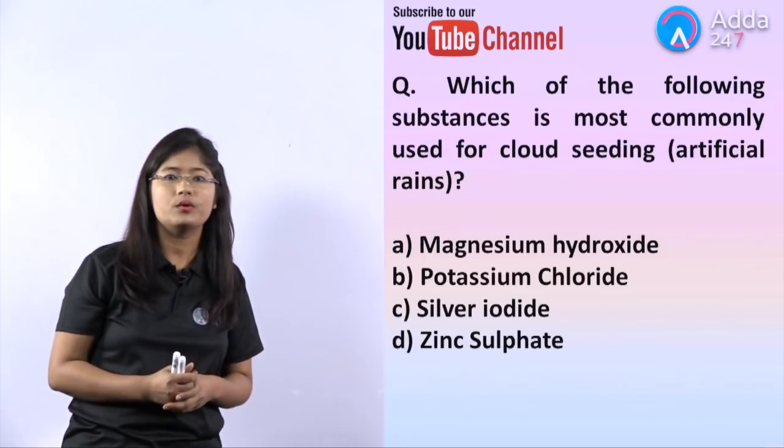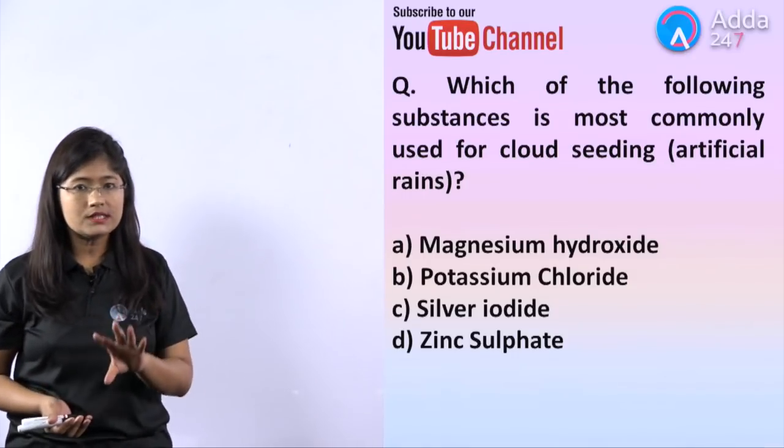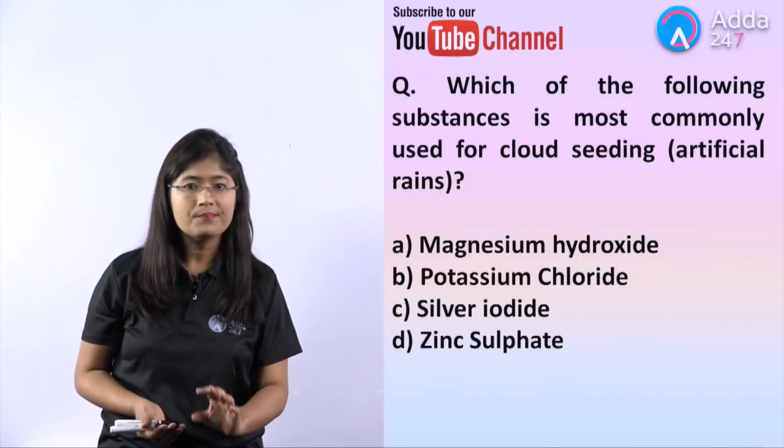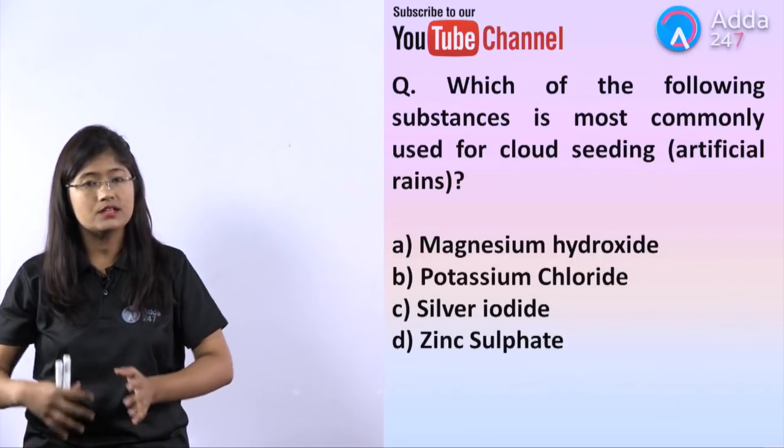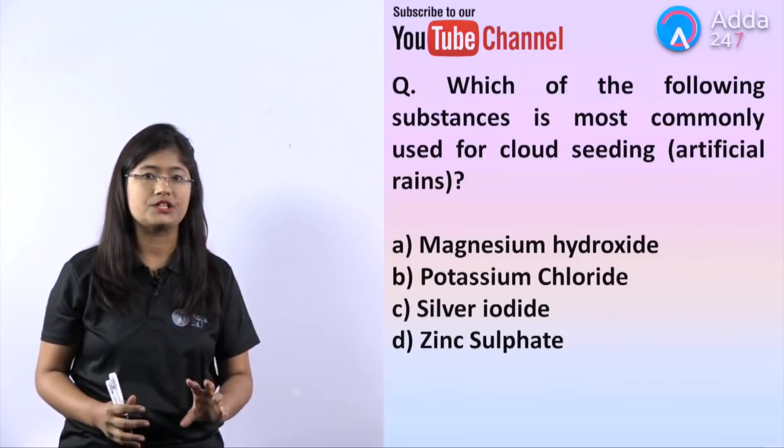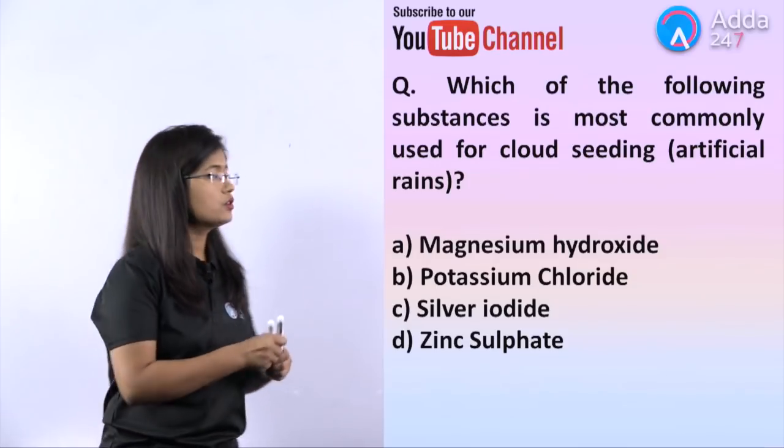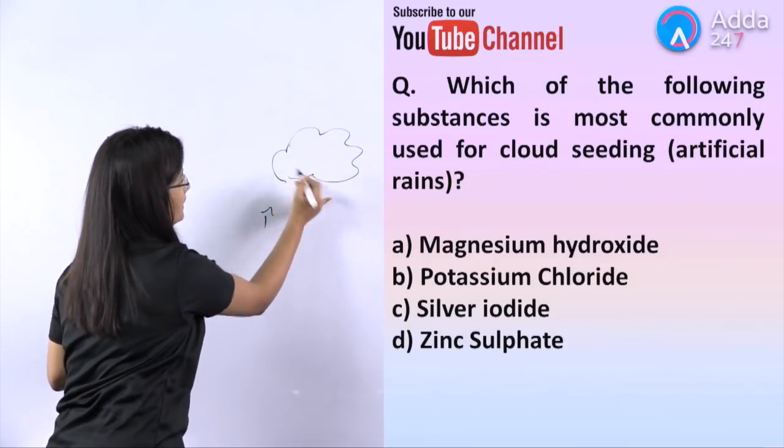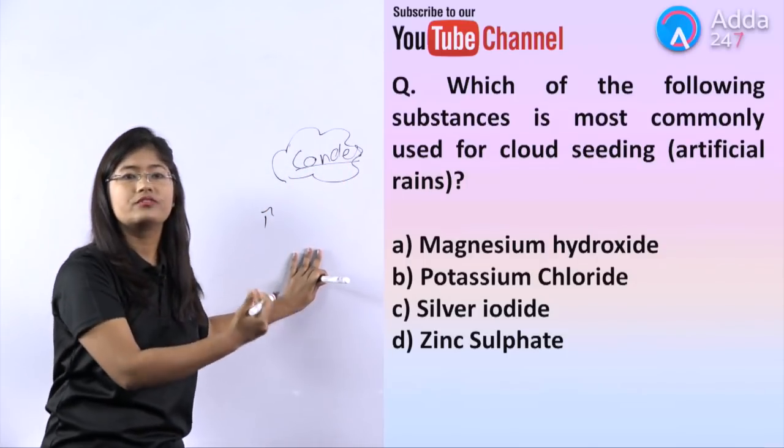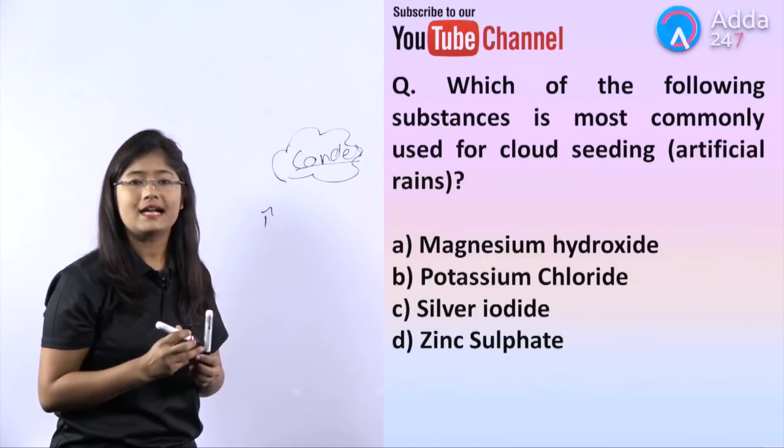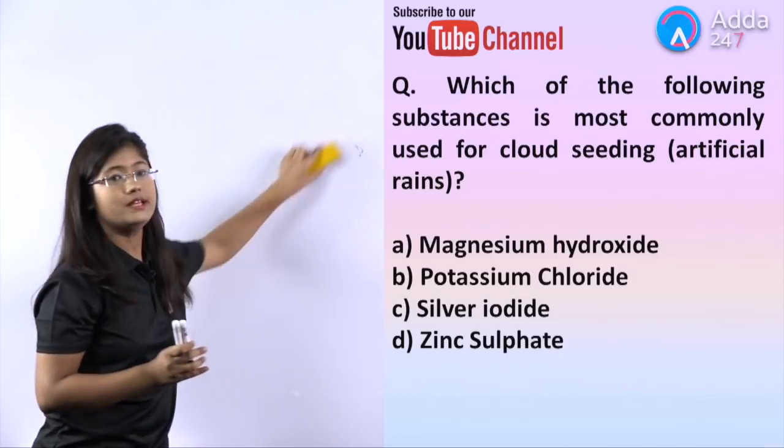Which of the following substances is most commonly used for cloud seeding? Please mark my words - cloud seeding has appeared in current affairs in August, so this may be very important. Karnataka government has also launched this. Silver iodide is used. It helps condense the clouds that form after evaporation. After that, rainfall will occur. Option C, silver iodide, will be the answer.